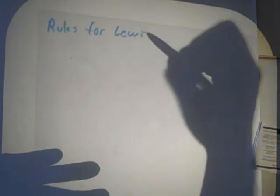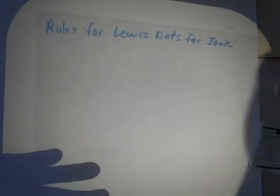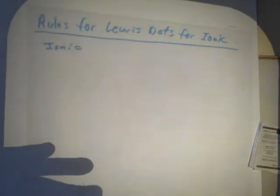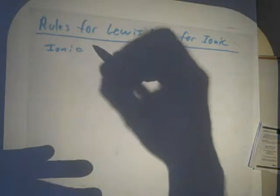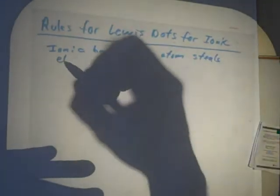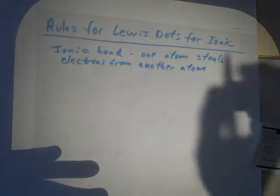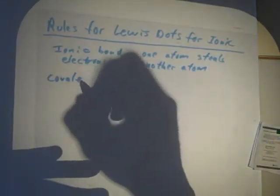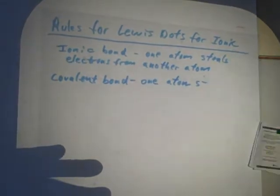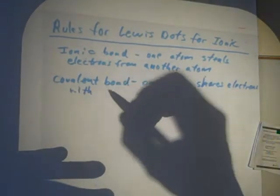Rules for Lewis Dots for ionic bonds. Well, it would probably be helpful if we knew what ionic meant. Ionic bond is when one atom steals electrons from another atom. Covalent is when one atom shares electrons with another atom.